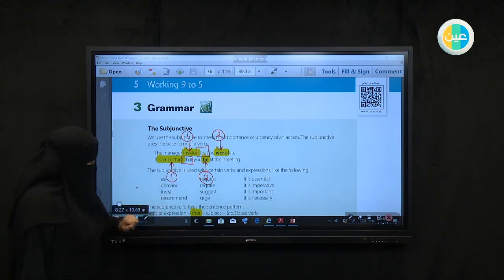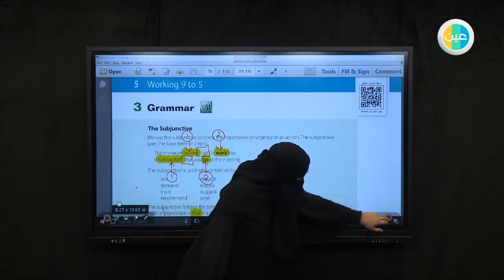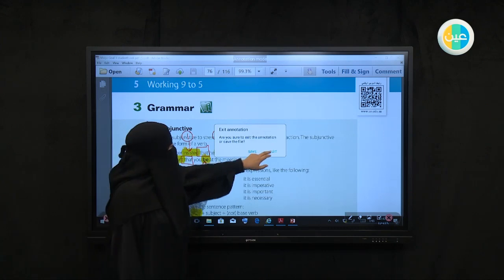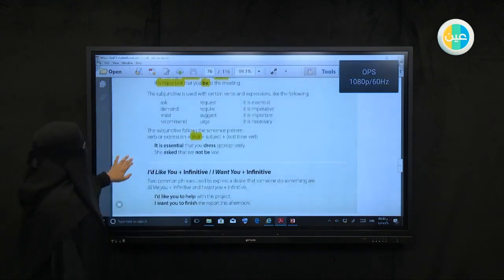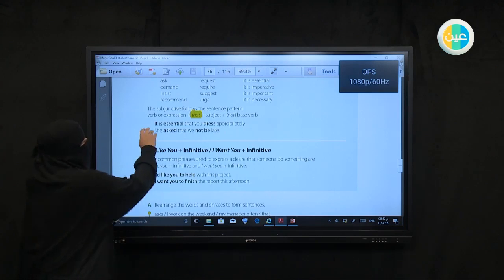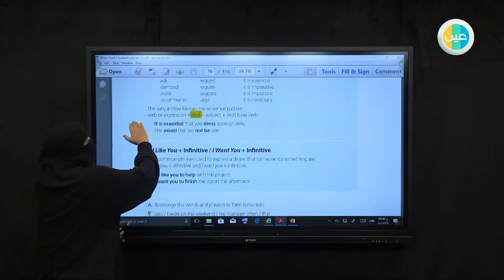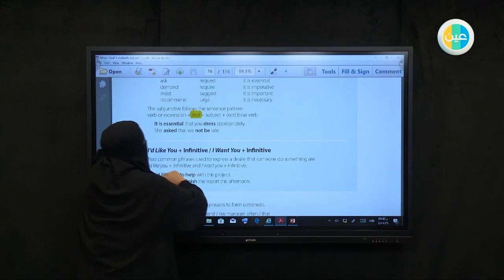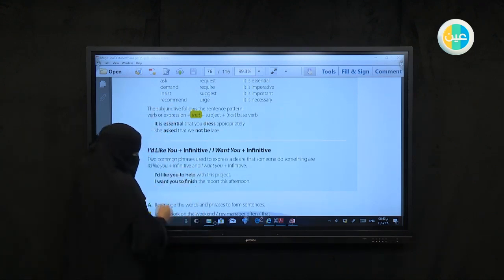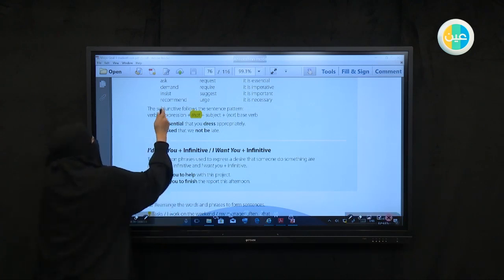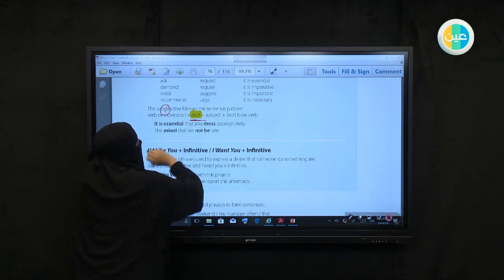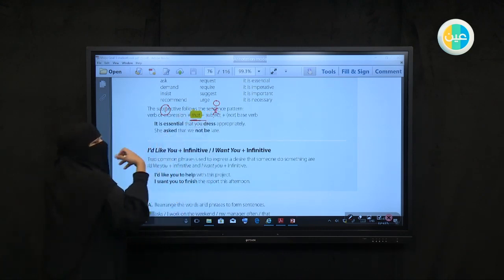Another example. It is important that you be at the meeting. 'Be' here is the required action. Your presence is very important - this is the first verb. That. But you be at the meeting. Your presence at the meeting. Notice 'be' here, we didn't change it to 'was' or 'is', we left it as is because it's subjunctive.